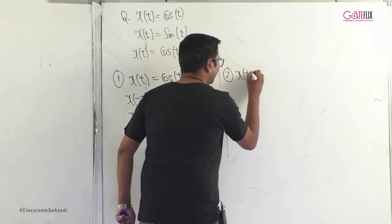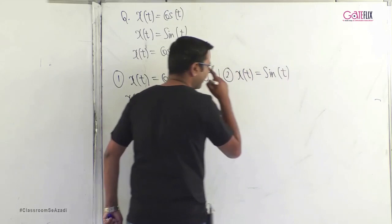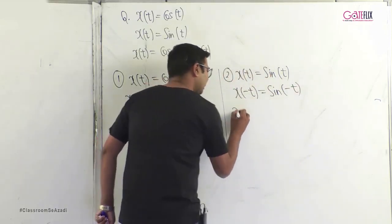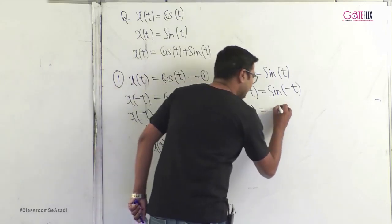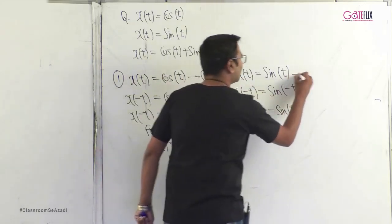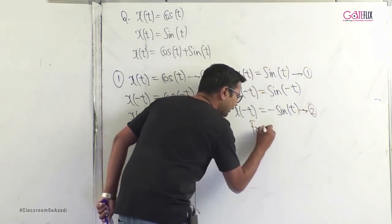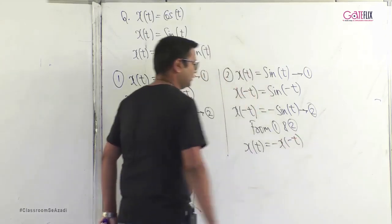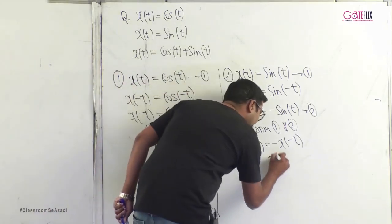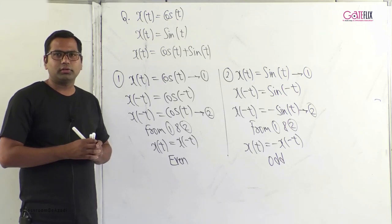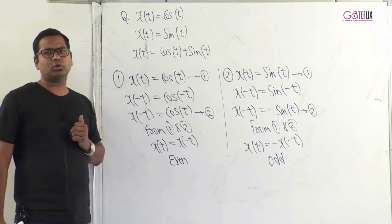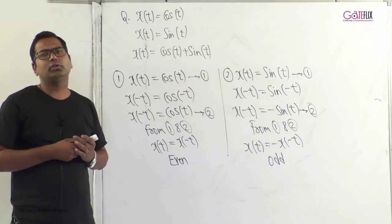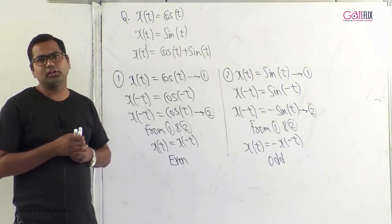Second example: x(t) = sin(t). We find x(−t) = sin(−t) = −sin(t). So x(t) = −x(−t), which means sin(t) is an odd signal. In summary, cosine is even and sine is odd.